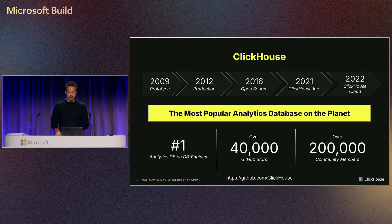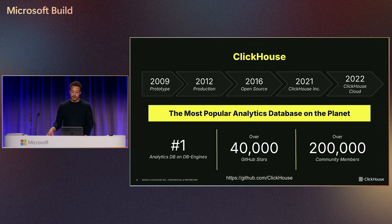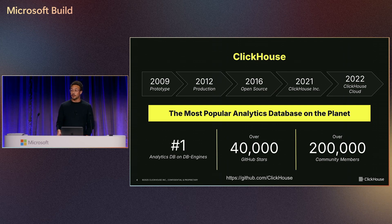Since its inception in 2009, the product was open sourced in 2016. ClickHouse, the venture-backed company, was incorporated in 2021, raising over $300 million in funding. We're ranked number one as an analytics database on DB Engines. We've received over 40,000 stars on GitHub, and thanks to over 1,500 contributors, we've grown a community of over 200,000 members.